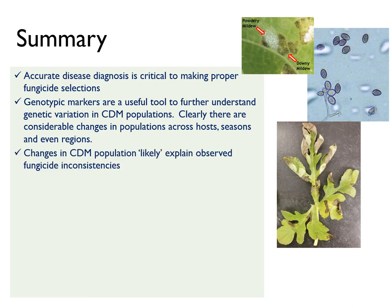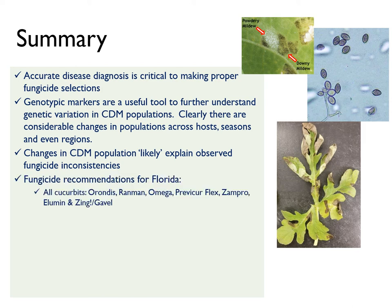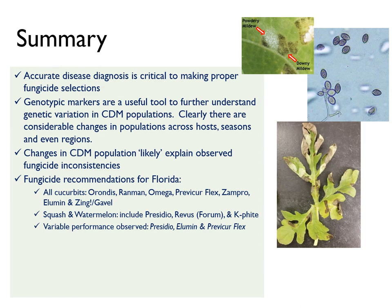And likely, some of these changes explain some of the variable performance observed in fungicide trials. For Florida, I would recommend for all cucurbits the use of Orondis, Ranman, Omega, Previcure Flex, Zampro, Illumin, and Zing in your fungicide rotations. For squash and watermelon, I would include Presidio, Revus, and Caefite. However, keep in mind some of the variable performance shown today for products like Presidio, Illumin, and Previcure Flex, which is the reason I recommend using these products early in the season and minimizing their use during your rotation.